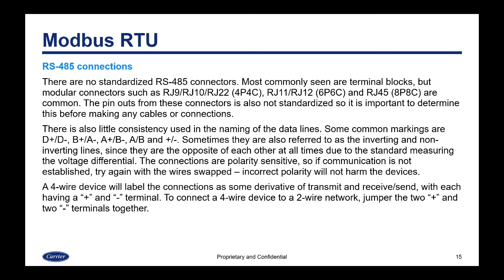The connections are polarity sensitive, so if communication is not established, try again with the wires swapped. The good thing is that incorrect polarity will not harm the devices. A four-wire device will label the connections as some derivative of transmit and receive or send, each having a plus and minus terminal. To connect a four-wire device to a two-wire network, you would jumper the two plus and the two minus terminals together.